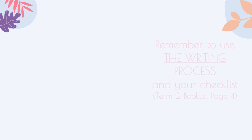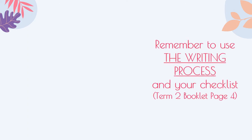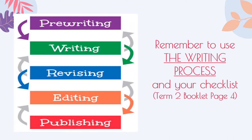You are also reminded that this is a writing activity and therefore the writing process must be applied. The five steps included in the writing process are pre-writing, writing, revising, editing, and publishing. Refer to page four of your term two booklet. You will find the writing skills checklist to be handy as well.